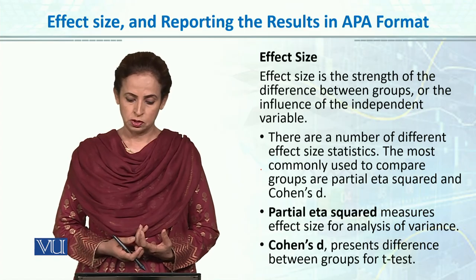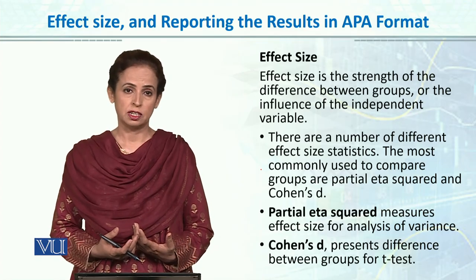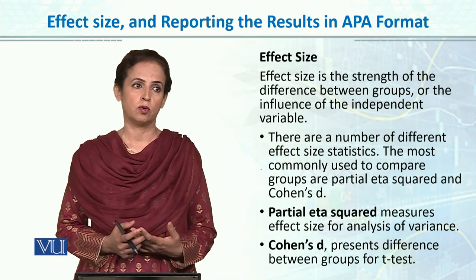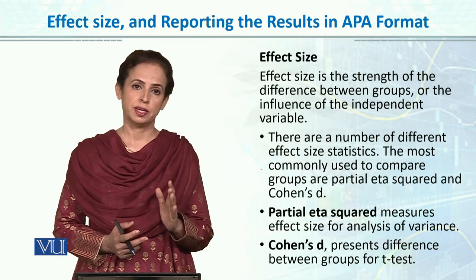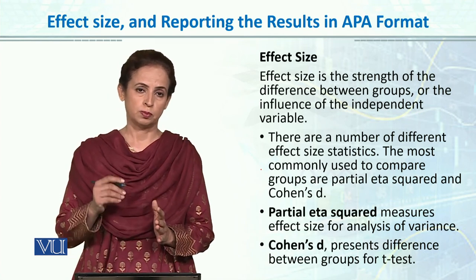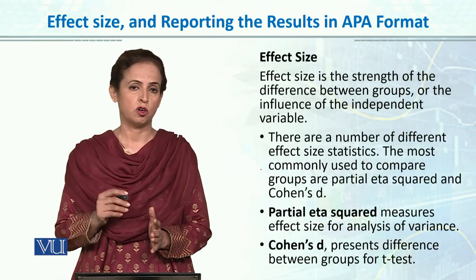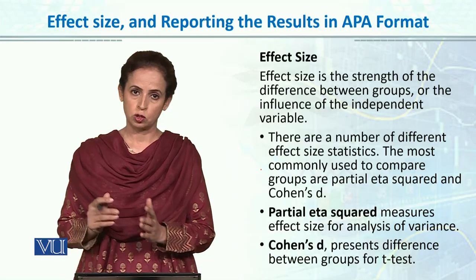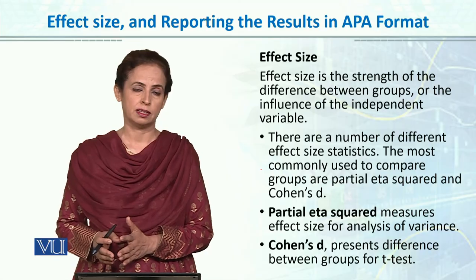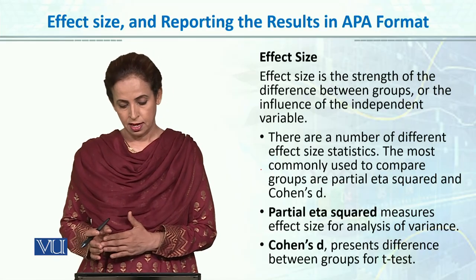The most commonly used effect size to compare groups is partial eta square, which we use in ANOVA. In SPSS, when we run ANOVA, there is an option to check that it also gives us the effect size, and it will automatically provide the partial eta square value in the output table.